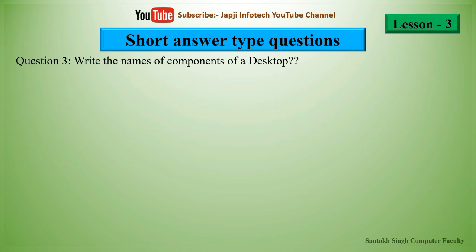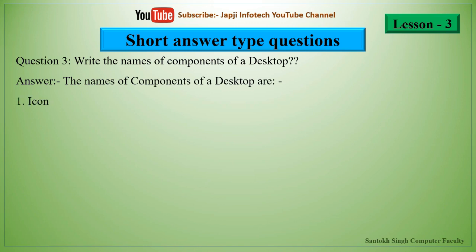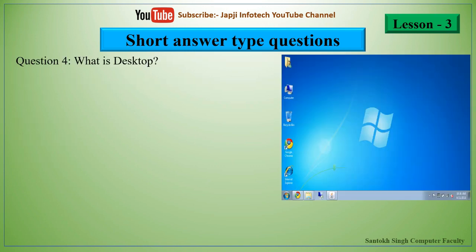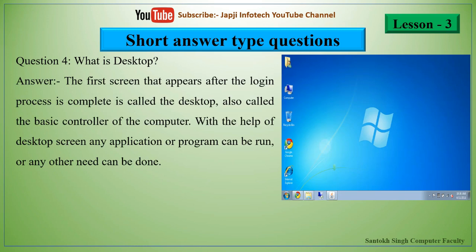The third question: write the name of components of a desktop. The components are icon, shortcut, wallpaper, and taskbar. The fourth question: what is a desktop? The first screen that appears after the login process is complete is called the desktop, also called the basic controller of the computer. With the help of the desktop screen, any application or program can be run.